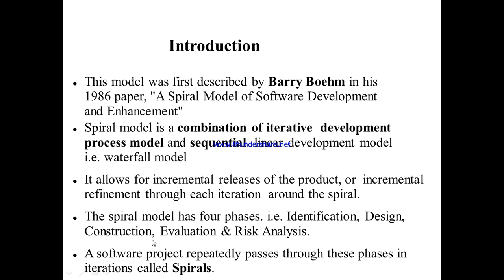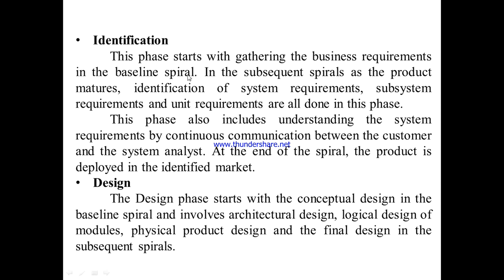The spiral model has four phases: identification, design, construction, and evaluation and risk analysis. A software project repeatedly passes through these four phases in iterations called spirals. Each iteration goes through these four phases — that is the meaning of one spiral — and the second iteration is the second spiral, repeating the same four activities.